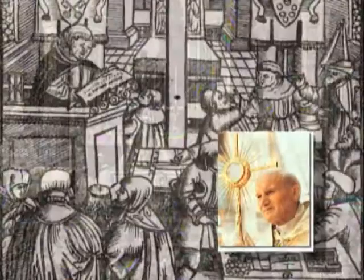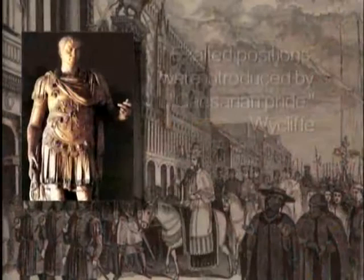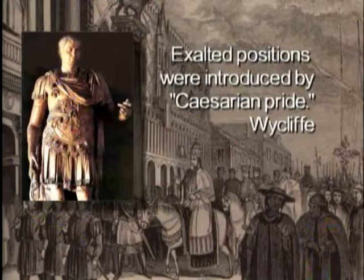He rejected the doctrine of transubstantiation, that the wafer becomes literally the body and blood of Jesus. He rejected indulgences. He taught that the apostolic churches — the true churches — only had elders and deacons, not popes and archbishops and cardinals and such. And he wrote in his own words that anything beyond the elders and deacons were introduced by Caesarian pride.